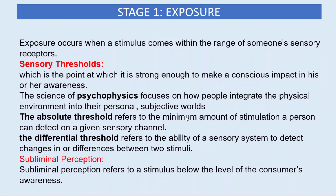Exposure occurs when a stimulus comes within the range of someone's sensory receptors. It happens in two main categories: sensory threshold and subliminal perception.